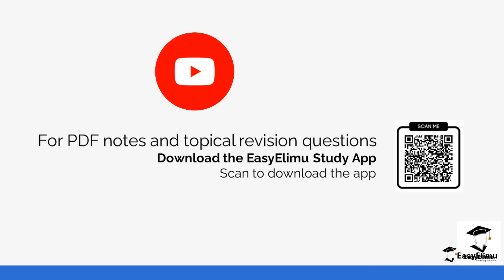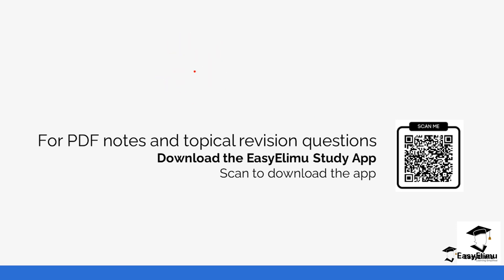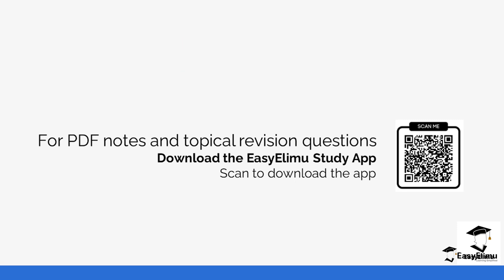That brings us to the end. You've seen the slight difference between when the coefficient of x² is 1 and when it is greater than 1 — there is only a slight difference. You can check out more revision questions and notes in the app on the same topic. See you in the next lesson.